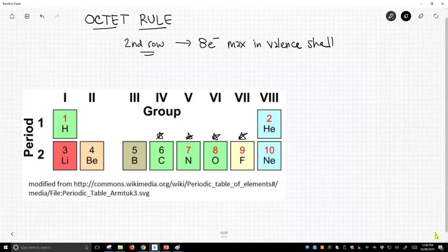Now second row means we're down here on the second period, and we're going to emphasize the elements carbon, nitrogen, oxygen, and fluorine. So if we think about the second shell, our valence shell for these particular elements, we have four orbitals within that shell.